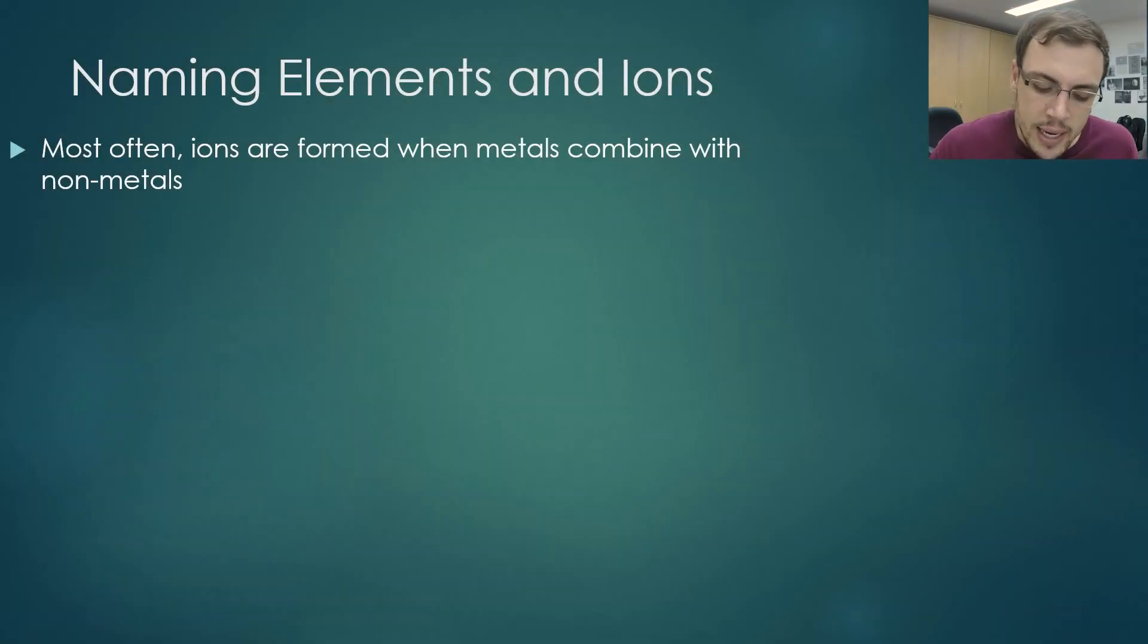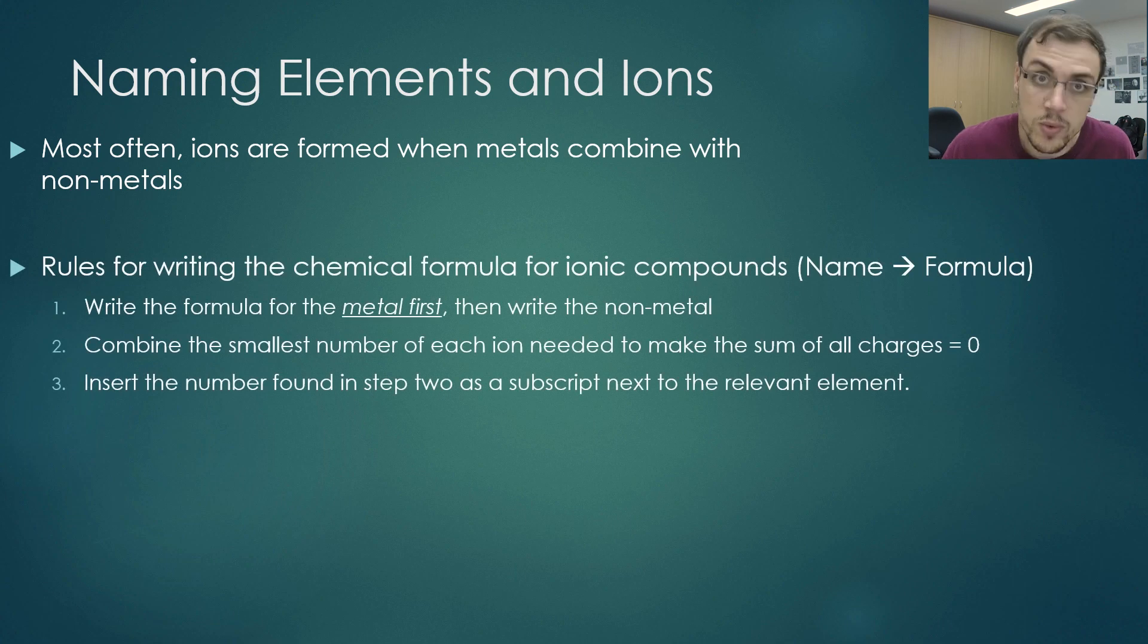Let us now look at naming these elements and these ions. Most often ions are formed when a metal combines with a non-metal. Remembering from our previous studies on the periodic table, this can give you a very big hint during the exams on how to name a compound.